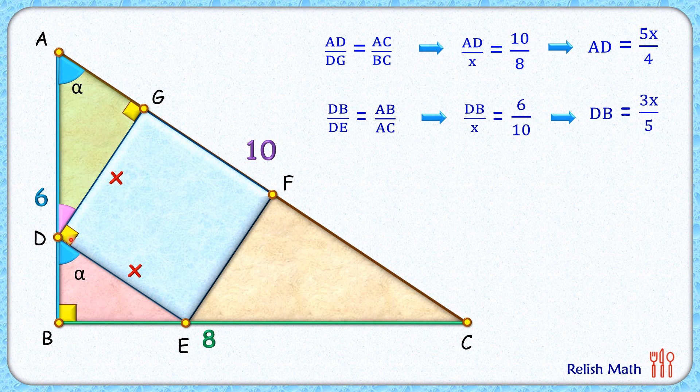Now this full length AB is nothing but AD plus DB. AD value is 5x upon 4, DB is 3x upon 5, and AB length is given as 6 centimeters. So here we can say that 6 equals AD which is 5x upon 4 plus DB which is 3x upon 5.